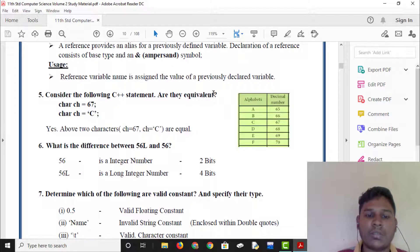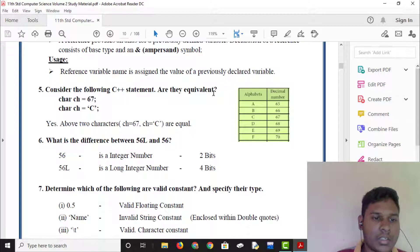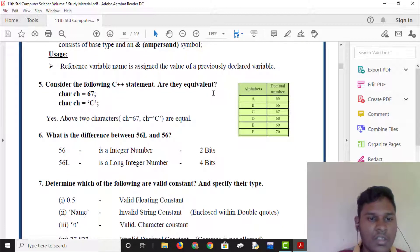Consider the following C++ statement. Are they equivalent? Char ch is equal to 67, char ch is equal to C. Above two characters, char ch is equal to 67, char ch is equal to C. A is 65, C is 67. Then, char ch is equal to 67, char ch is equal to C, they are the same, then are they equal? Yes, about two characters, char ch is equal to 67, char ch is equal to C, are equal.